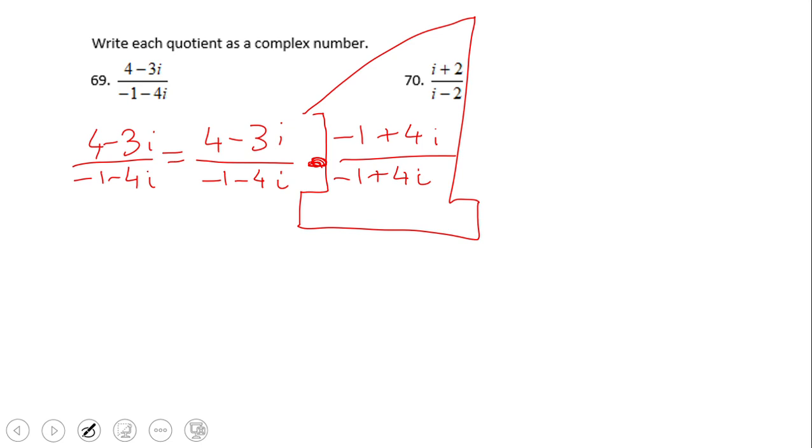We can multiply. We can keep this equal sign. So now we're going to use FOIL for the top. And we get negative 4 plus 16i plus 3i minus 12i squared. And for the bottom complex number, denominators, we're going to use the shortcut, which says negative 1 squared plus 4 squared. We square each part of the complex number, the real part and the imaginary part.